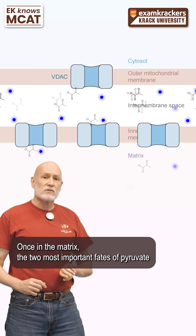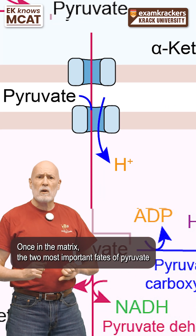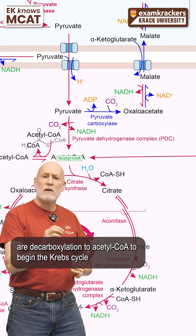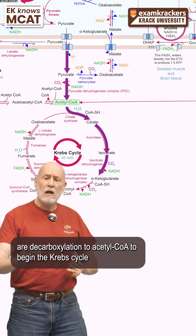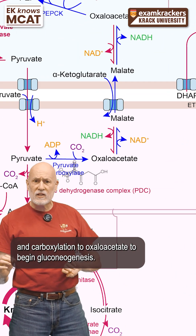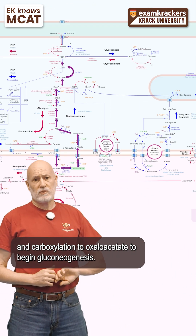Once in the matrix, the two most important fates of pyruvate are decarboxylation to acetyl-CoA to begin the Krebs cycle, and carboxylation to oxaloacetate to begin gluconeogenesis.